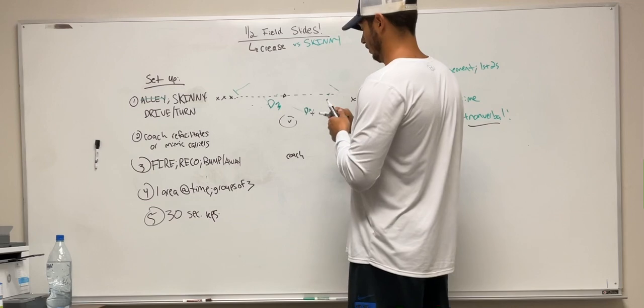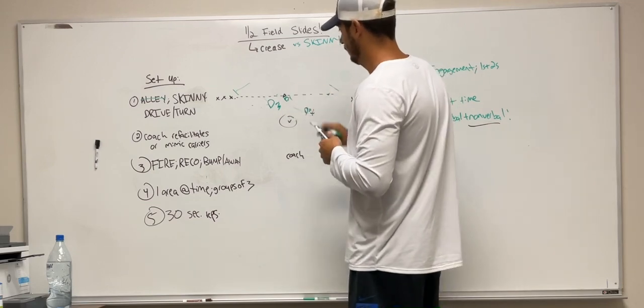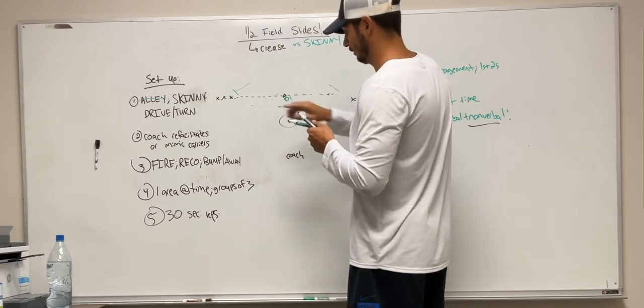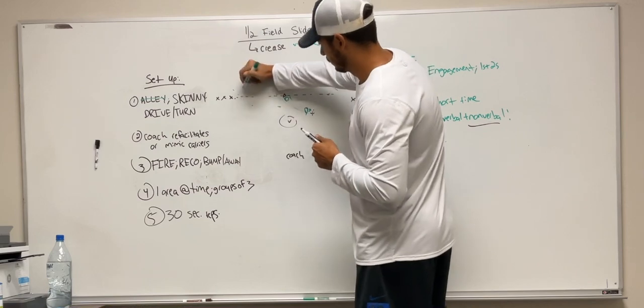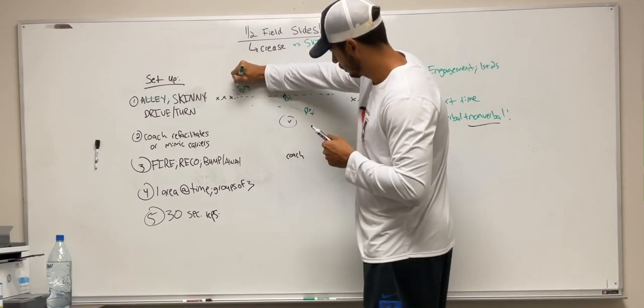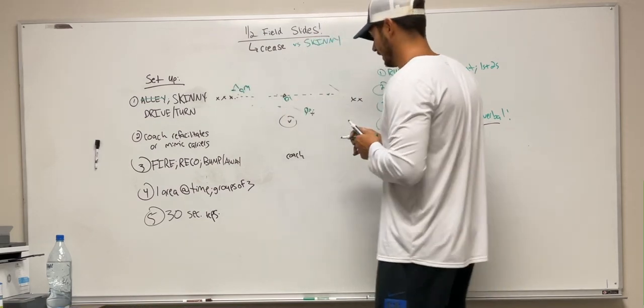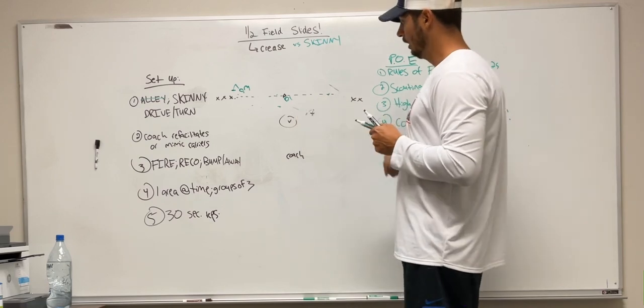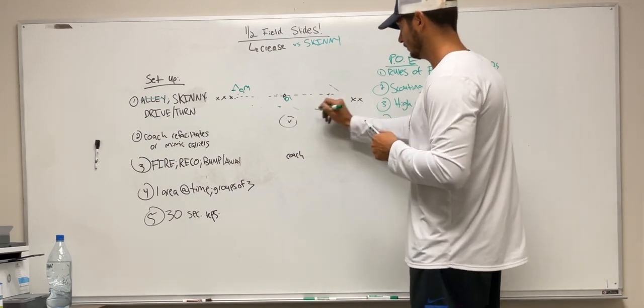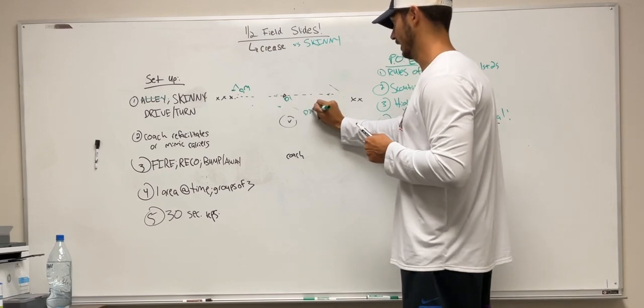So D1 ends up here. D3 ends up on ball but shading up the field and forcing skinny and D2 who was our original slider is somewhere in this area.